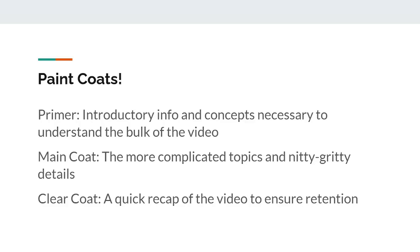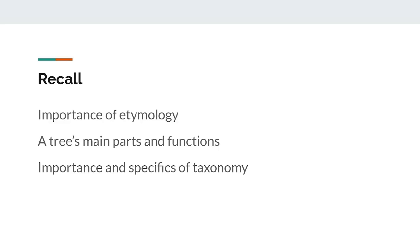Remember from the previous video we talked about the importance of etymology. Knowing certain prefixes and suffixes can help you figure out the meanings of words you haven't seen before. We talked about the main parts of a tree — the roots, trunk, and leaves — and each of their purposes. And finally we talked about the importance of taxonomy and how it helps us classify different species of trees.